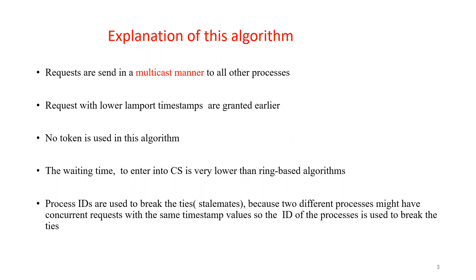In the Suzuki-Kasami algorithm, we used tokens. But here, in the Ricart-Agrawala algorithm, we are not using any token. The waiting time to enter the critical section is lower than ring-based algorithms. Process IDs are used to break ties, because if two different processes request with the same timestamp values, then we use IDs to break the ties.